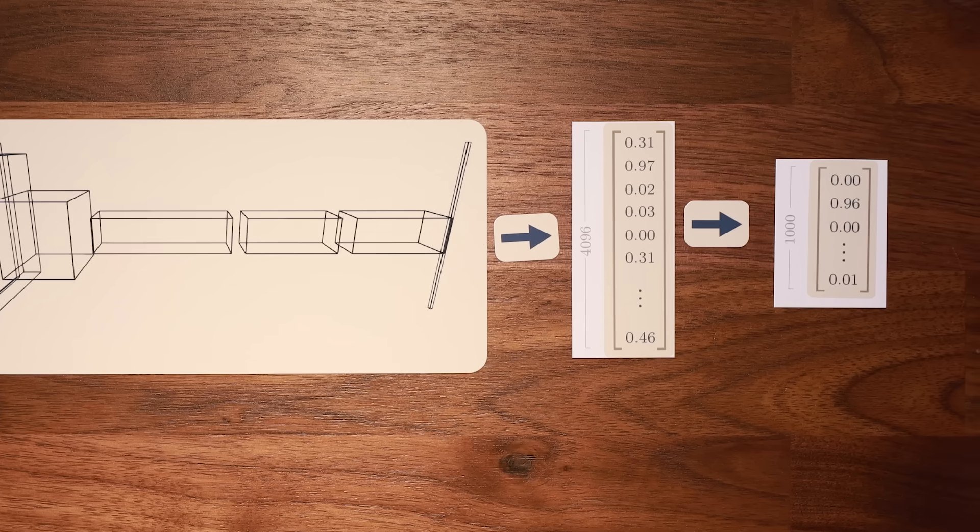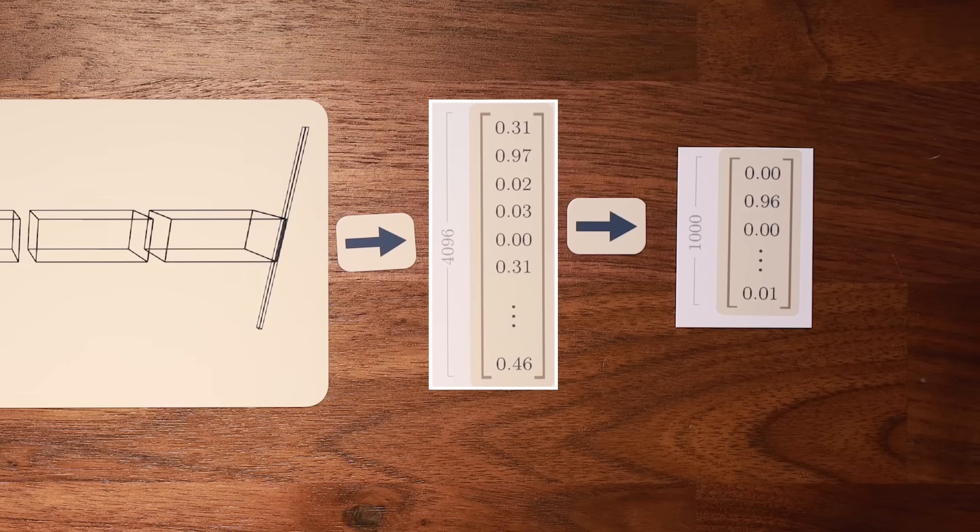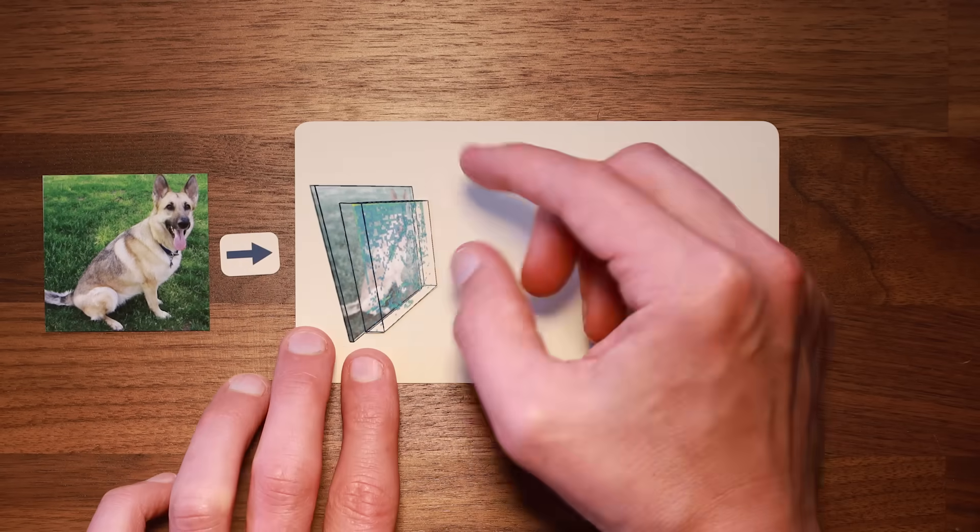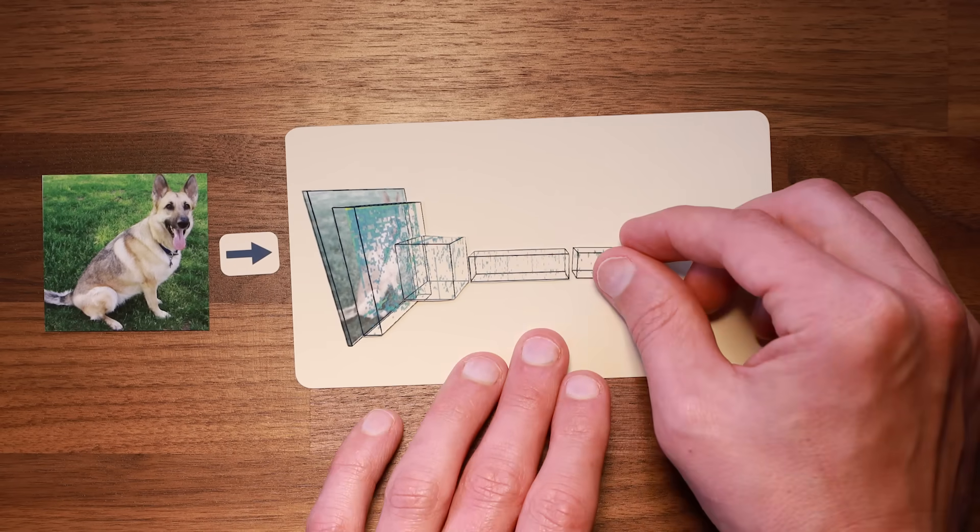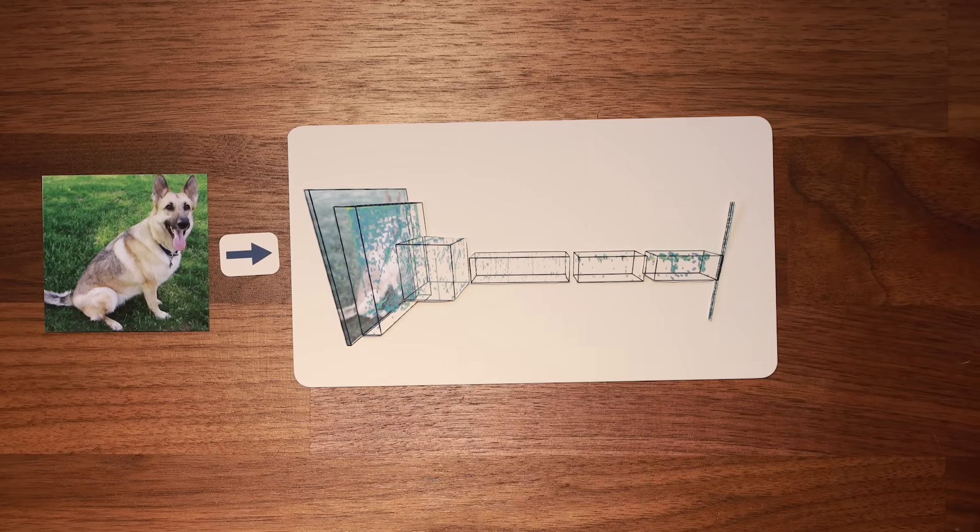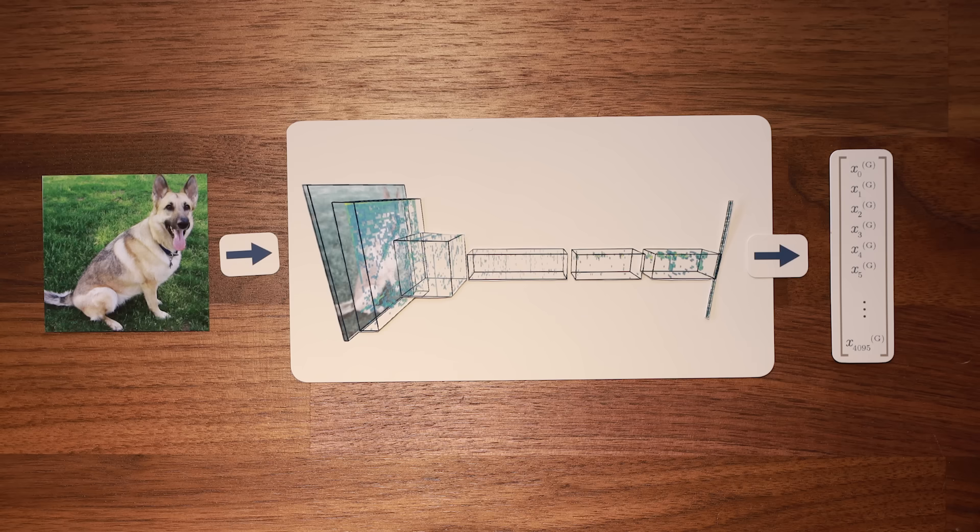Krizhevsky, Sutskever, and Hinton noticed that this second-to-last layer vector demonstrated some very interesting properties. One way to think about this vector is as a point in 4096 dimensional space. Each image we pass into the model is effectively mapped to a point in this space. All we have to do is just stop one layer early and grab this vector.